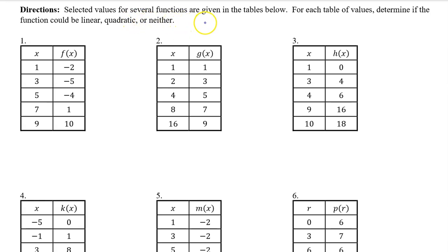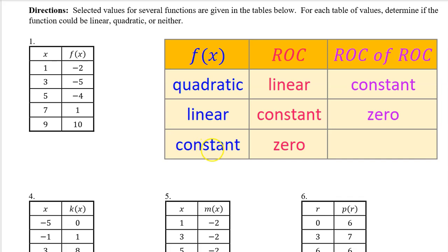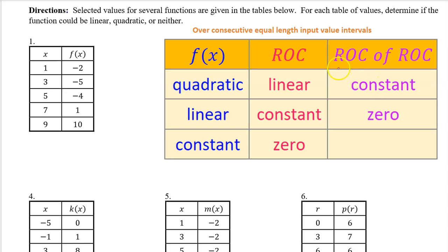Selected values for several functions are given in the tables below. For each table of values, determine if the function could be linear, quadratic, or neither. In the previous video, we learned that if a function is linear, the average rate of change is constant. And if a function is quadratic, the rate of change of the rate of change is constant — in other words, the rate of change changes at a constant rate. That last statement is only true over consecutive equal-length input value intervals, so get really comfortable with that phrasing.